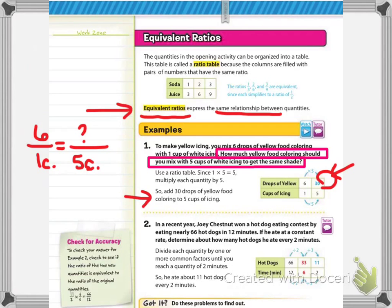Notice off to the side in red, working problem number one or example number one, I highlighted with the box the information about the food coloring. To make yellow icing, you mix six drops of yellow food coloring with one cup of white icing. If you want the same shade of yellow, you have to do the same equal parts if you add more icing. In the ratio table, they've started out with six drops per one cup of icing.